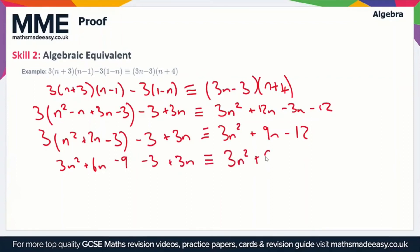So let's just rewrite the right hand side for completion. Now we just need to collect like terms on this left hand side. So we've got 3n squared, now the plus 6n and the plus 3n simplifies to plus 9n. The minus 9 and the minus 3 simplifies to minus 12.